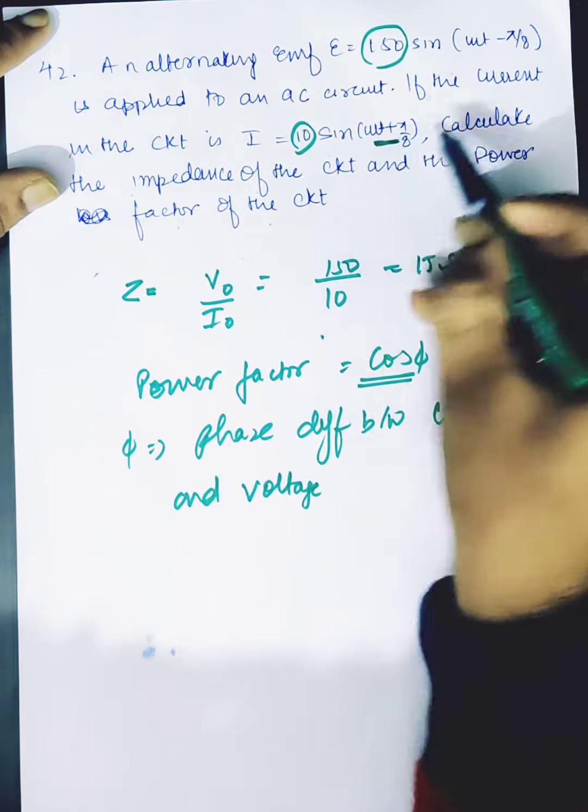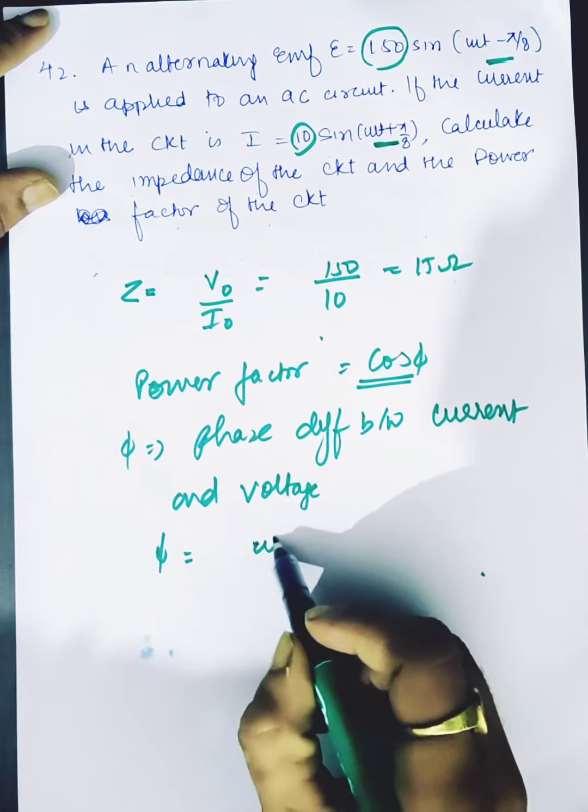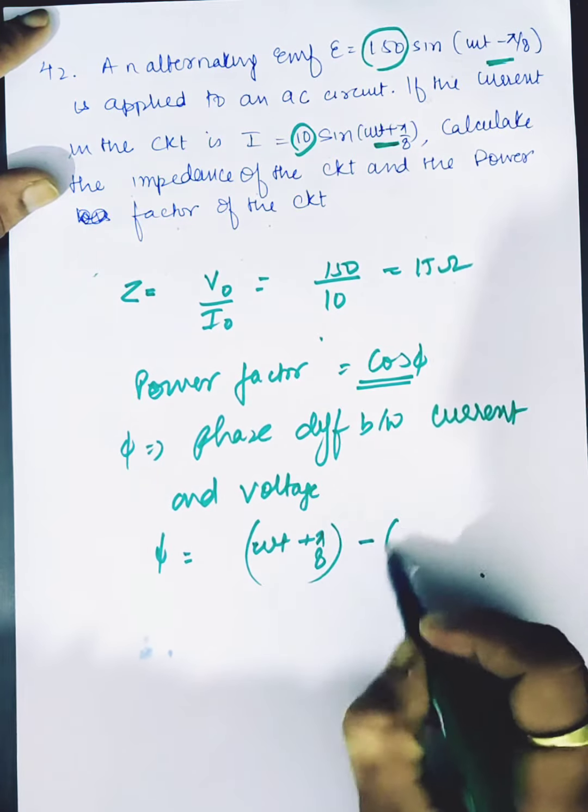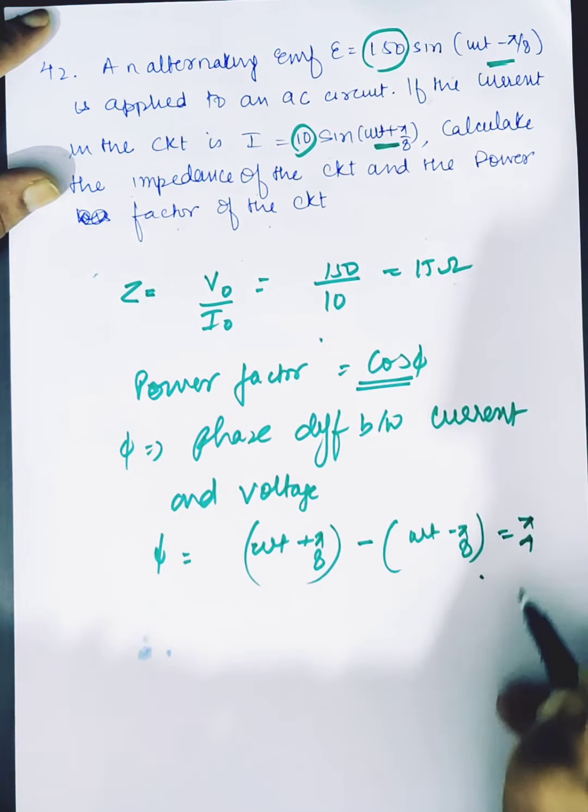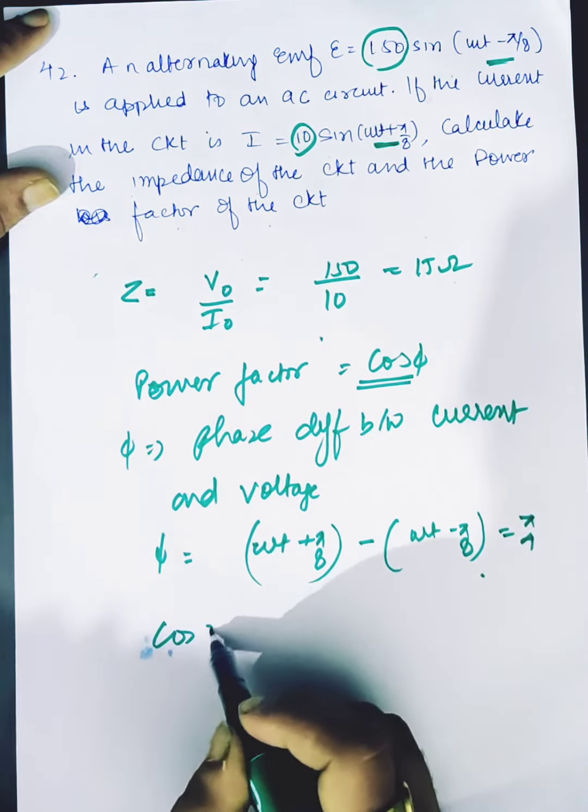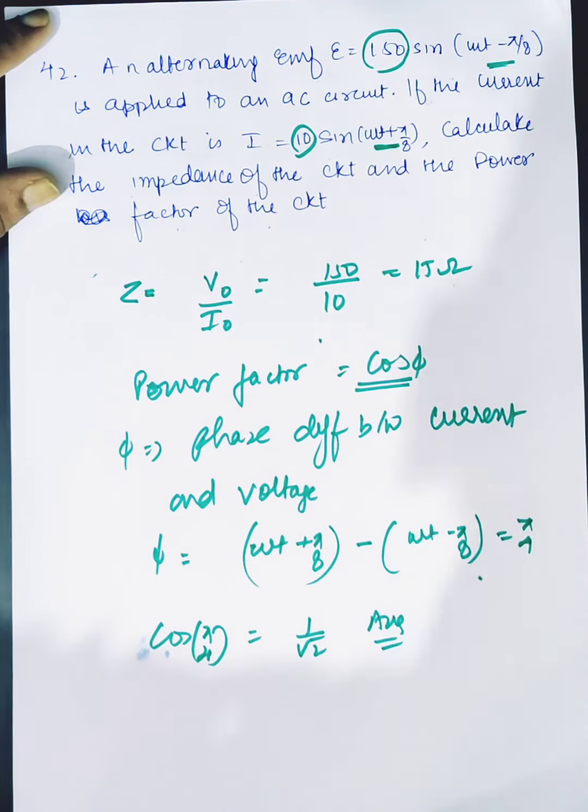That is (ωt + π/8) minus (ωt - π/8), so I will get π/4. And then cos(π/4) will be 1 by root 2. That is the answer to the question.